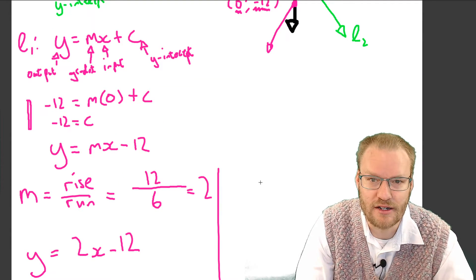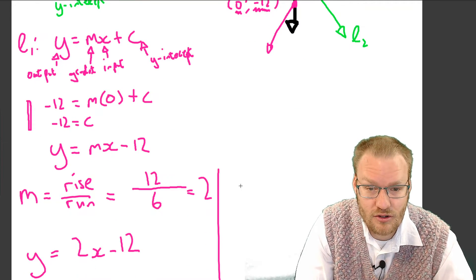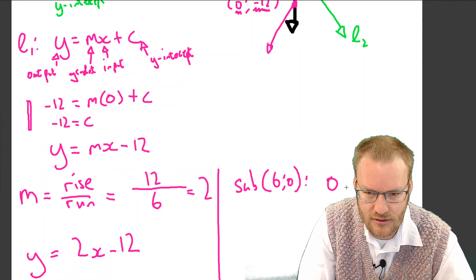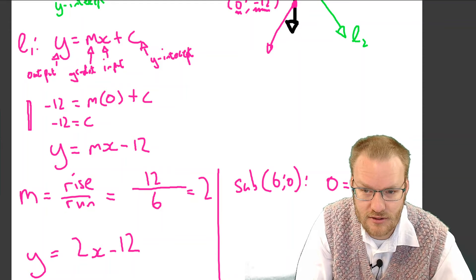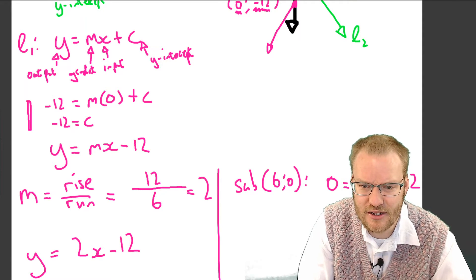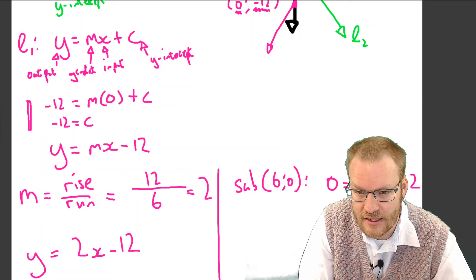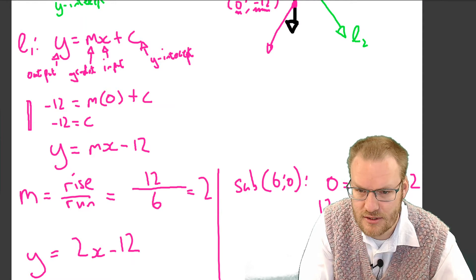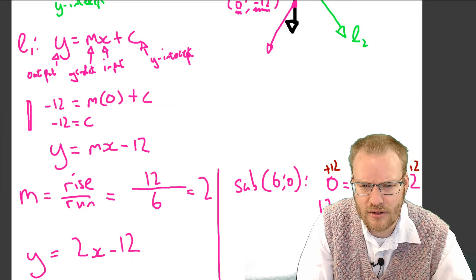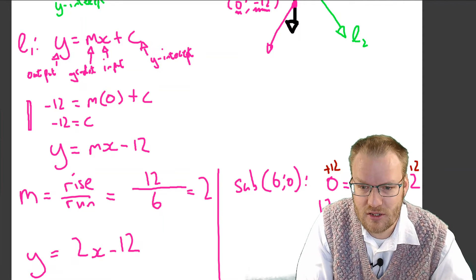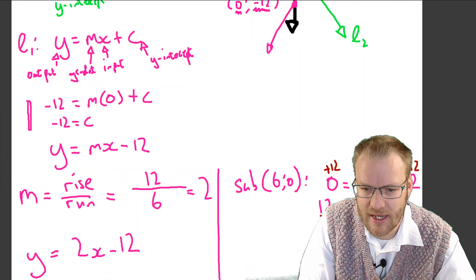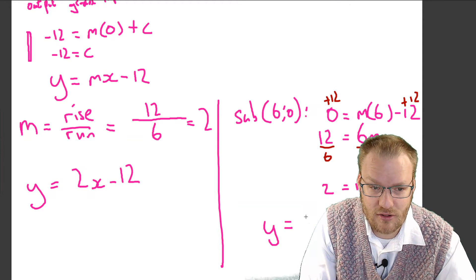Option two: substitute the second point in. Sub in six, zero — so zero equals m times six minus twelve. Add twelve to both sides: twelve equals 6m. Divide by six: m equals two. Same answer. y equals 2x minus 12. For any input we can find the output, and for any output we can find the input.